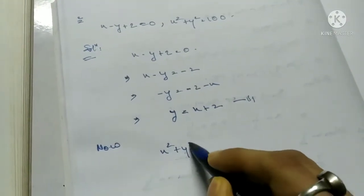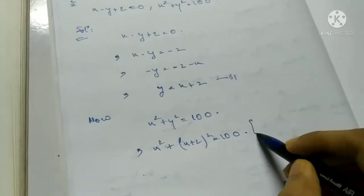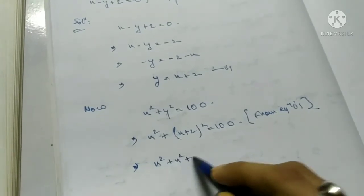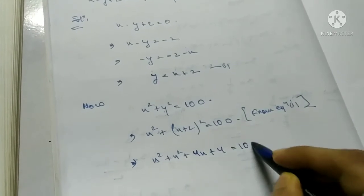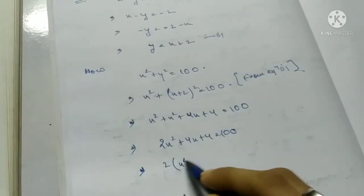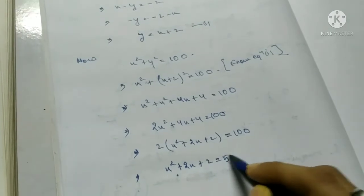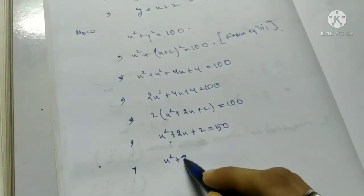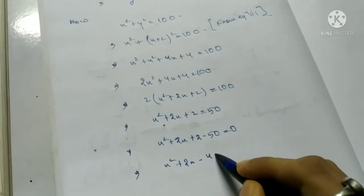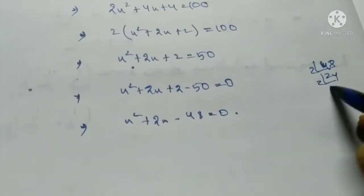Substituting into x squared plus y squared equals 100: x squared plus (x plus 2)² equals 100, giving x squared plus x squared plus 4x plus 4 equals 100. Taking 2 common: x squared plus 2x plus 2 equals 50, so x squared plus 2x minus 48 equals 0.